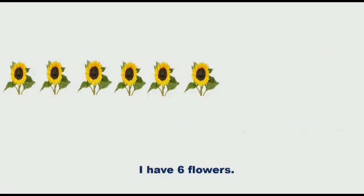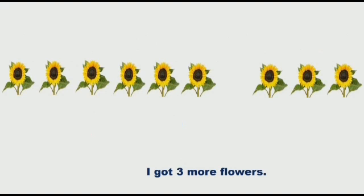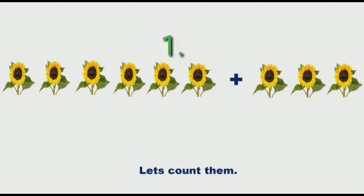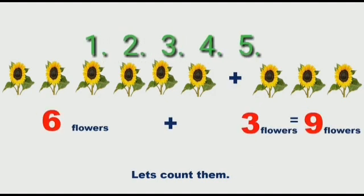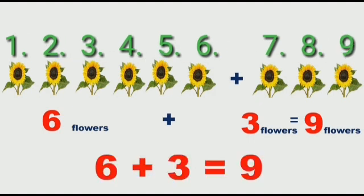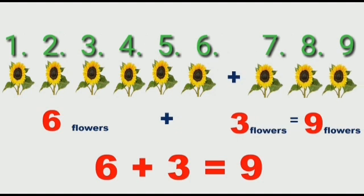Let's take another example. I have six cars. I got three more cars. So how many total cars do I have? Let's count them. Six cars plus three cars is equals to nine cars. So what we did? We add them. Six plus three is equals to nine.